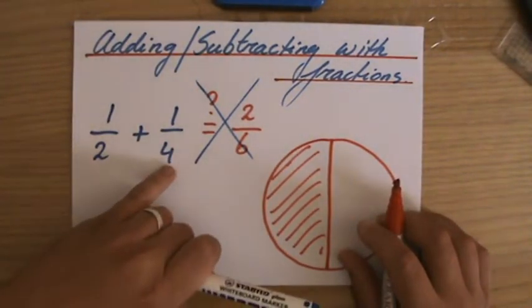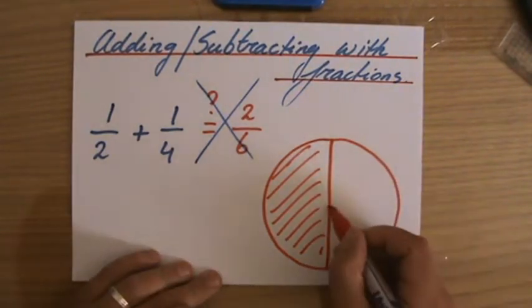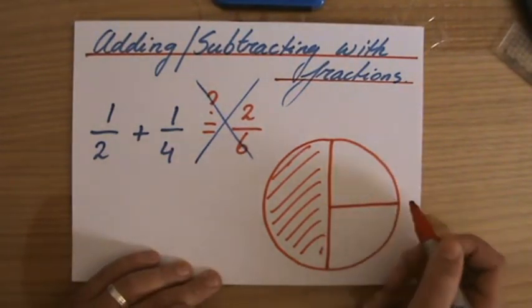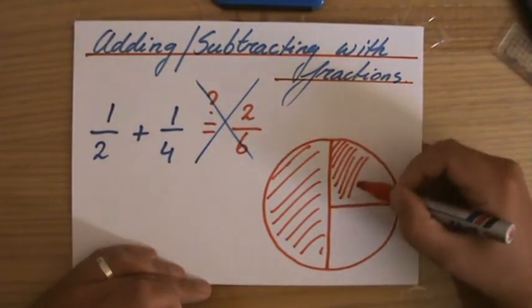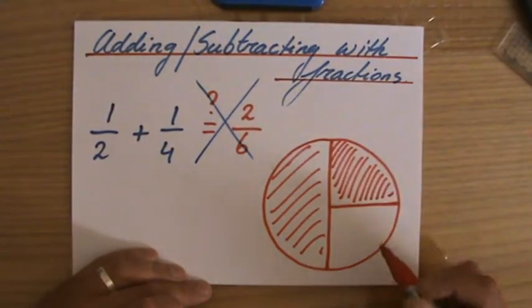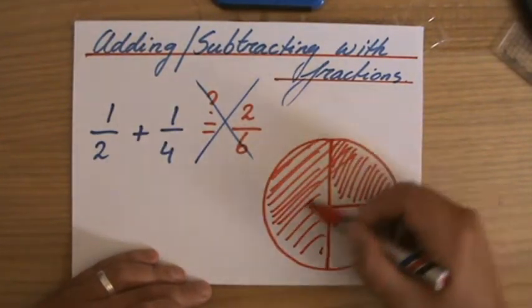And then I eat another quarter of a pizza. Now, a quarter of a pizza is roughly like this. So that's the second time I eat a quarter of a pizza. How much did I eat in total?